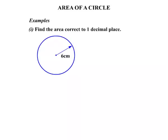We're asked to find the area correct to one decimal place. We have a circle with a radius of 6 centimeters. So there's our formula: A = πr².